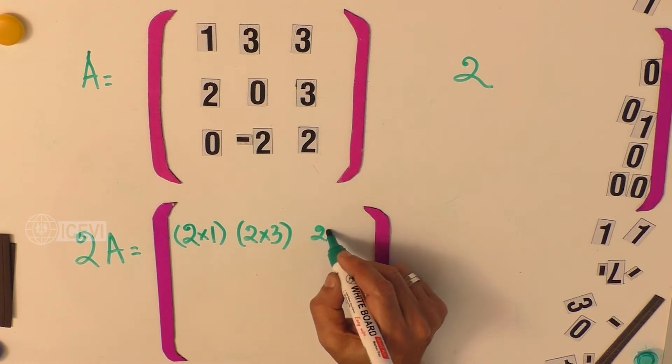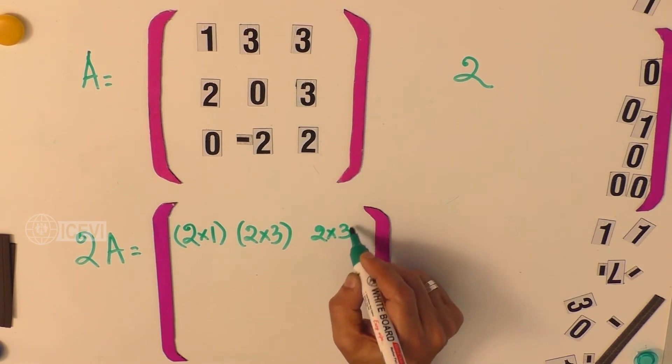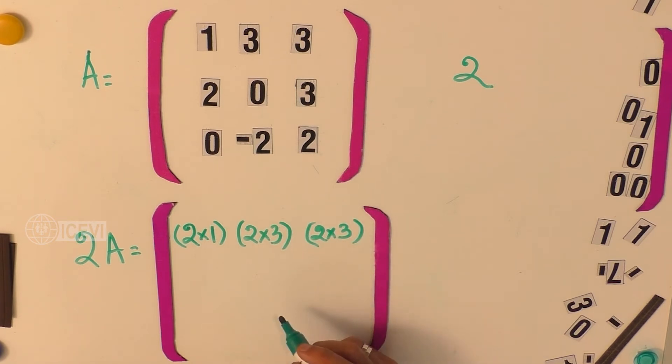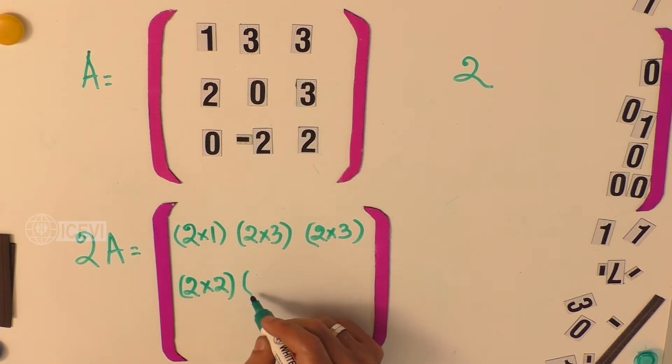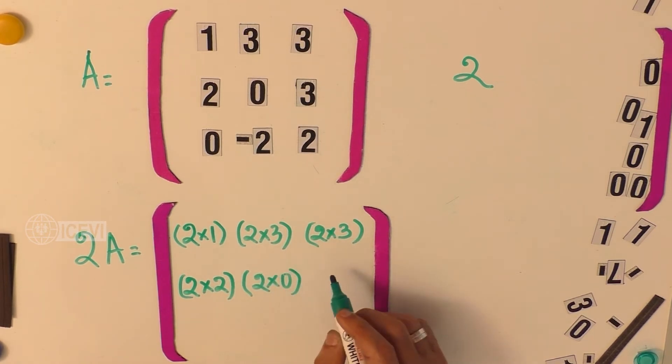The third element is 2 by 3. Similarly, the second row elements will become 2 by 2, and the next element is 2 by 0, and the last element is 2 by 3.